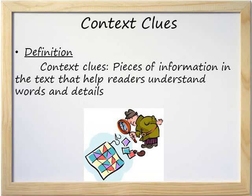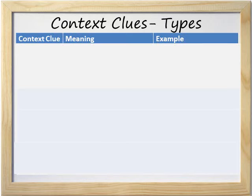Put it all together and we get context clues. The definition of context clues is pieces of information in the text that help readers understand words and details. Today we're going to learn about five types of context clues that you can see when you're reading. Each type of context clue helps you understand the meaning of a new word.